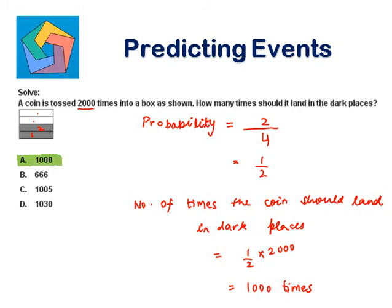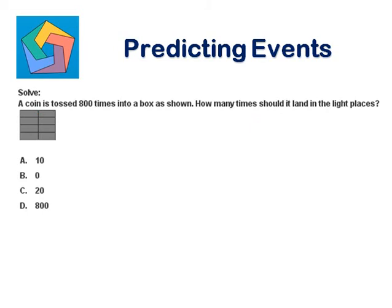Next problem. Solve. A coin is tossed 800 times into a box as shown. How many times should it land in the light places? What is the probability of landing in the light places? We do not have any light place here. All places are dark. So possible outcomes become 0. Total outcomes are 8. So the probability becomes 0.